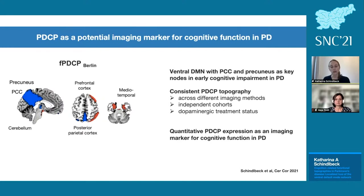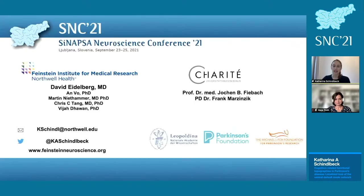The PDCP topography is a very stable marker, replicable across different imaging methods with FDG PET and resting state fMRI, both showing very consistent topographies, replicable in independent cohorts in New York and Berlin. It was also independent of dopaminergic treatment status — the Berlin cohort was scanned on levodopa while the New York cohort was off levodopa. The PDCP expression can be quantified at the single-subject level and therefore represents a valuable marker for cognitive function in Parkinson's disease patients. It could be used in clinical trials to assess treatment effects, and as a broader clinical marker in the future to assess early cognitive changes in patients with Parkinson's disease. Thank you very much for your attention. I'd like to thank my mentor David Eidelberg at the Feinstein Institute, and also Ann Wu.